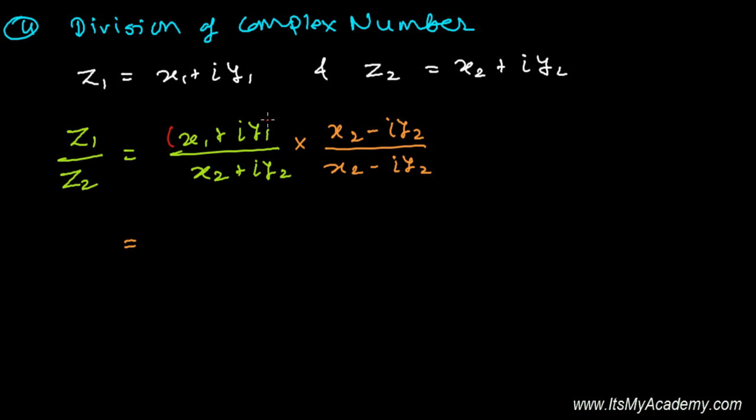I'm just going to multiply these two complex numbers x1 + iy1 and x2 - iy2. In the denominator, it's (a+b) and (a-b), which is the formula a² - b².